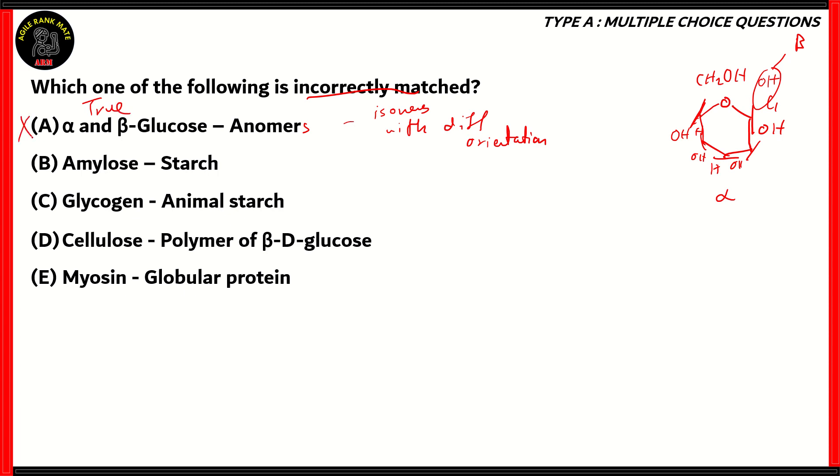When here we're asked to find out which of these is incorrectly matched, so if the match is correct, then we consider the option incorrect. Amylose starch. Amylose is one of the two chains forming starch. So therefore again, they are correctly matched, so the option is incorrect. Glycogen is found in animal starch, so again, that's a right match. Option C is incorrect. Cellulose is a polymer of beta-D glucose, and again, that's the reason why humans can't digest it, because of the form of glucose that it's in. So option D is also incorrect because the match is correct.